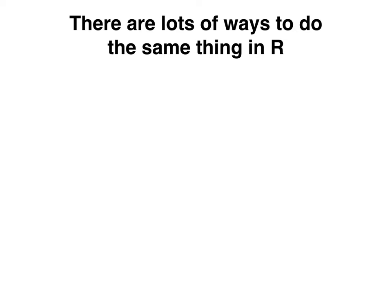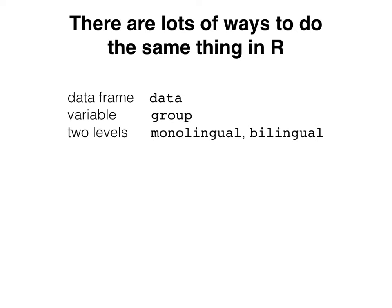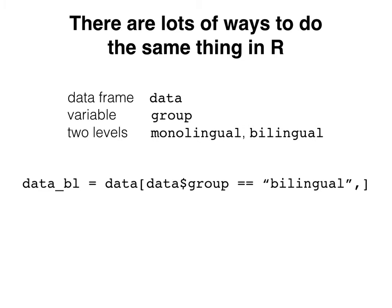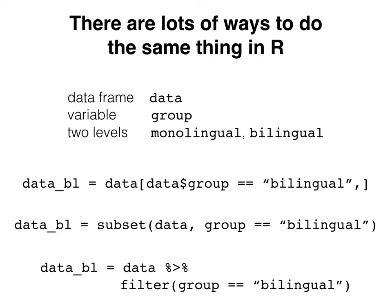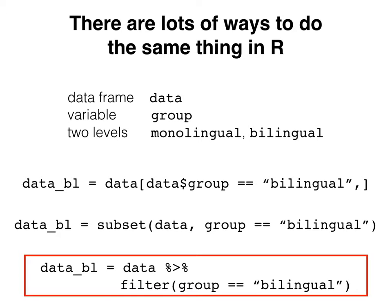Before going into details of the code we just wrote, I want to emphasize that there are a lot of ways to do the same thing in R. R is an open source language, which means anyone can make new packages and new ways to do things — which can sometimes lead to confusion. For example, creating a data frame with just the bilingual data could be done in several ways. In this course we'll be focusing on the dplyr method. If you've used other methods in the past, that does not mean they are incorrect — we're just using a different method. If you've never seen those other methods, don't worry about them; we won't be using them.